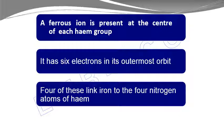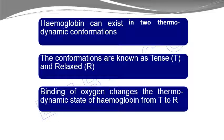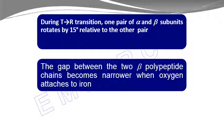Hemoglobin normally exists in two forms: T for tense and R for relaxed. When oxygen binds to hemoglobin, the hemoglobin becomes relaxed — it changes shape from the tense state to the relaxed state. During this conversion, a pair of alpha and beta subunits rotates by 15 degrees, and the gap between the two beta polypeptide chains becomes narrower when oxygen attaches.